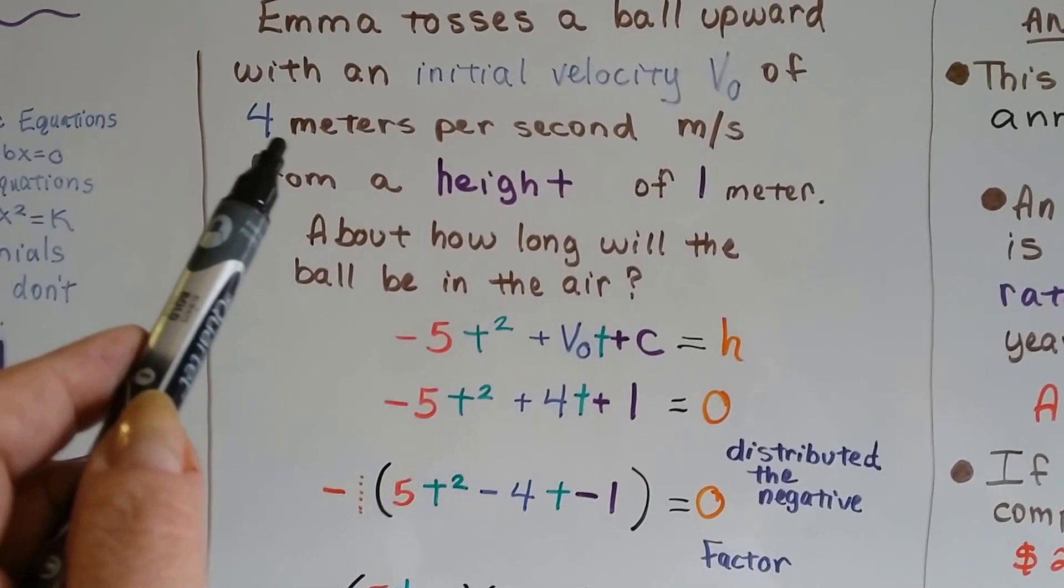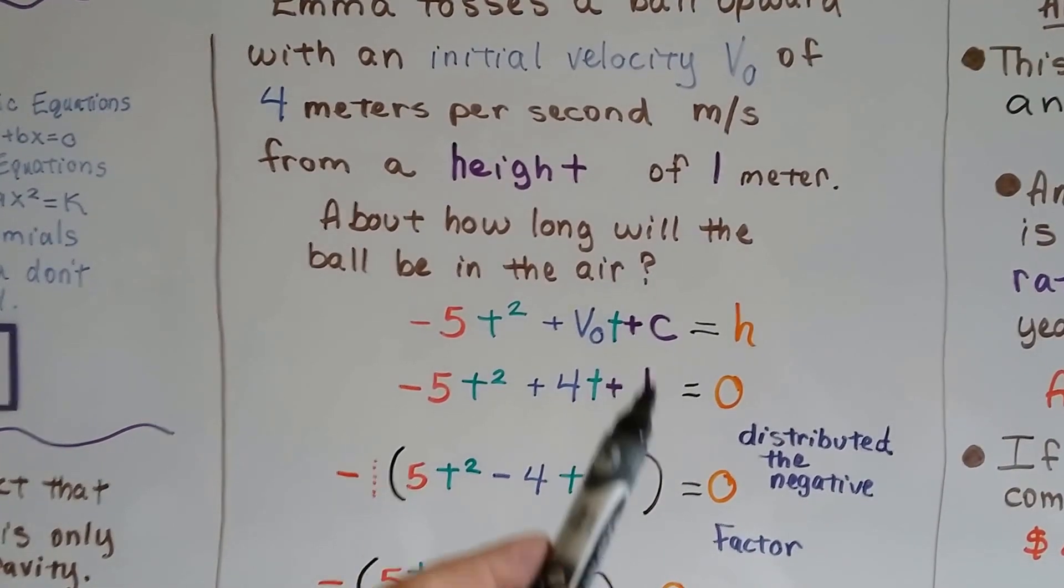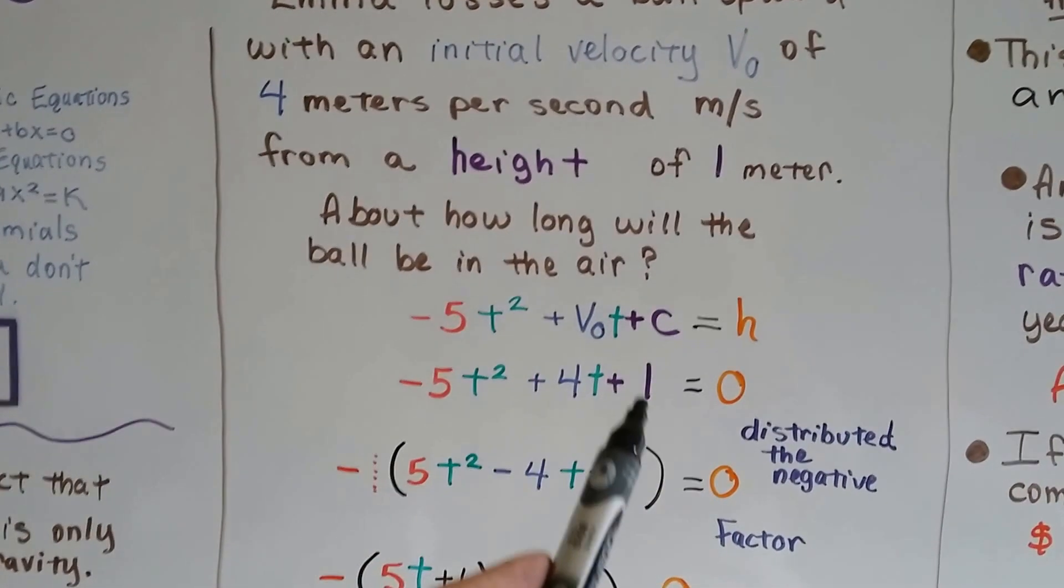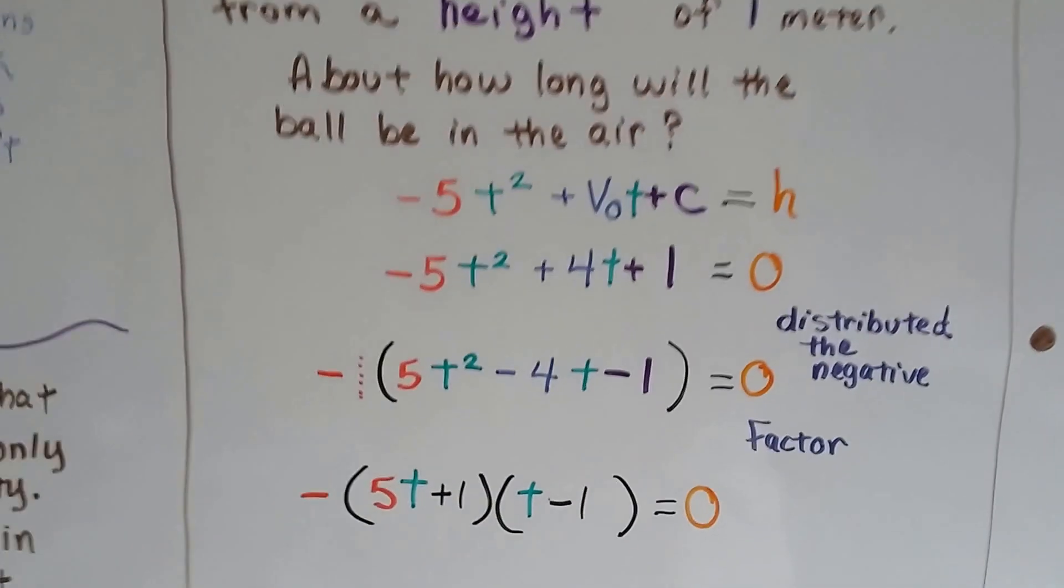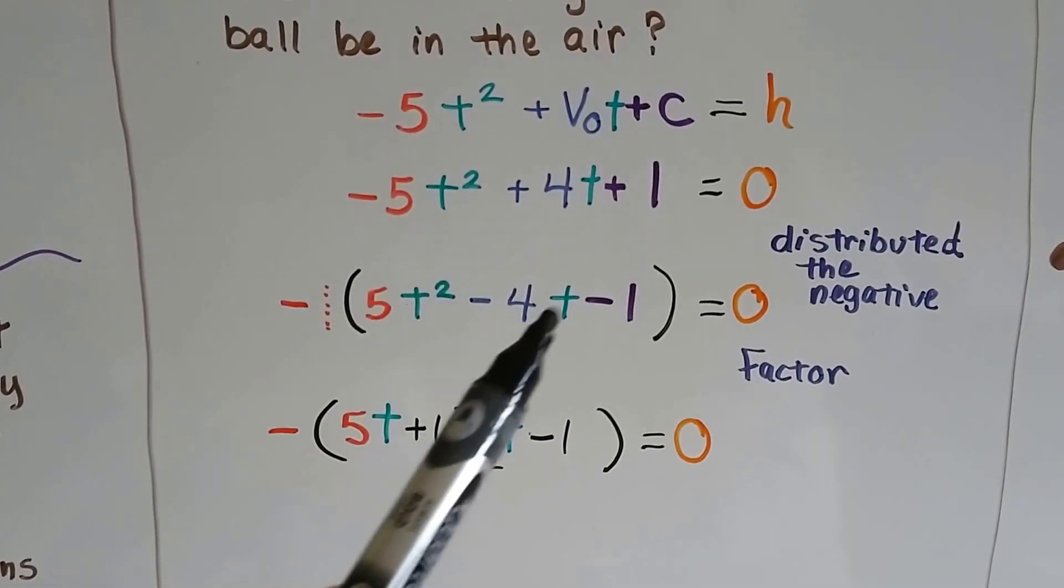We got 4 for our v zero, so we put a 4 here instead. We've got 1 meter off the ground, because that's how tall she is, so we put the 1 for c. And we're going to distribute this negative.